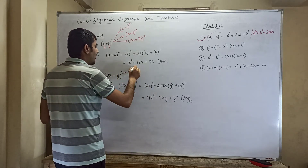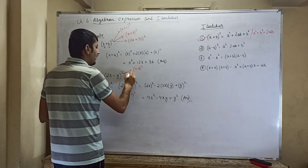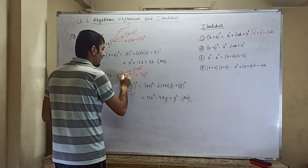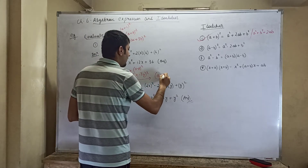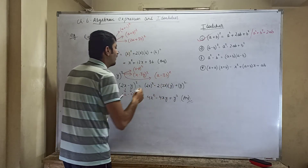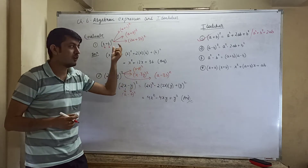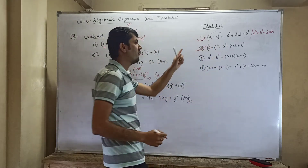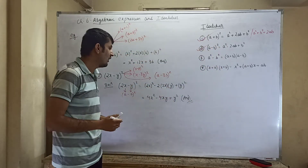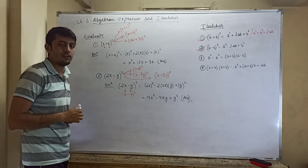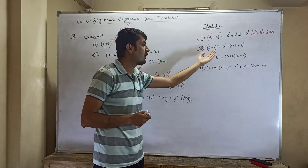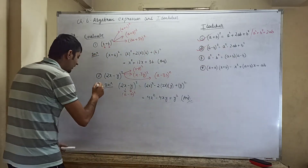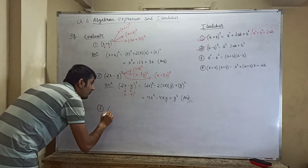They can also ask you (x − y)², (x − 3y)², or (a − 3b)². Whenever a subtraction-type expression is given whole squared, you use the second identity. Now let us go to the third identity: a squared minus b squared equals (a + b)(a − b). Let me do one example.